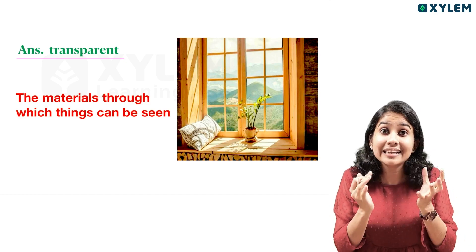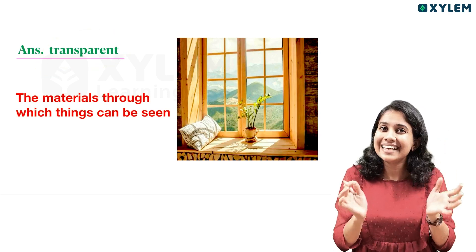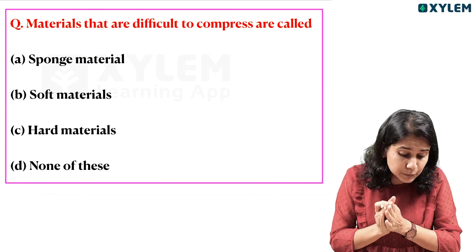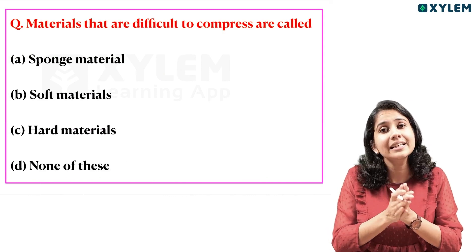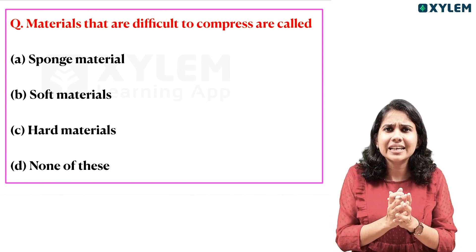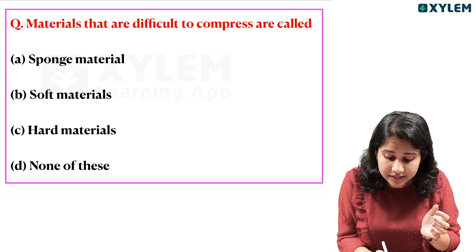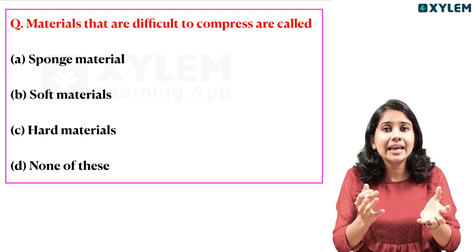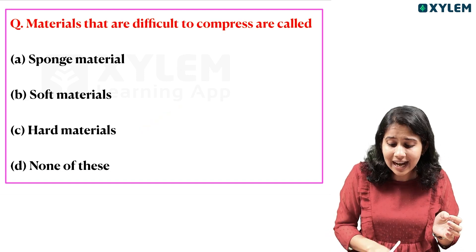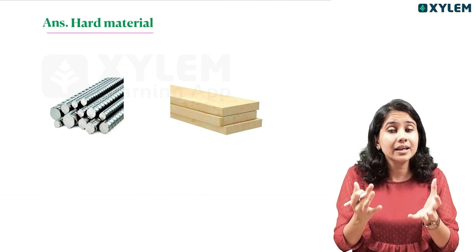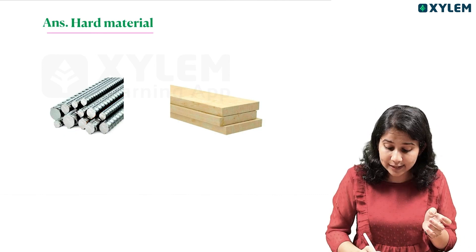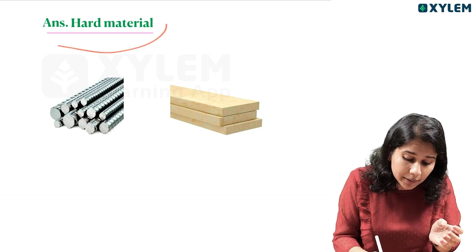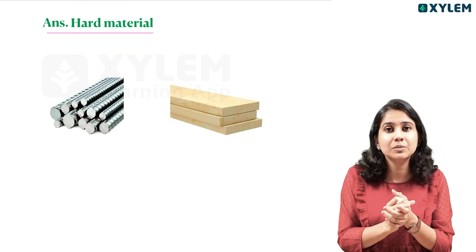The second question: Materials that are difficult to compress are called what? Sponge material is soft material. The answer is hard material. Many different materials are difficult to compress. Examples include steel, wood, and iron objects — these are all examples of hard materials.